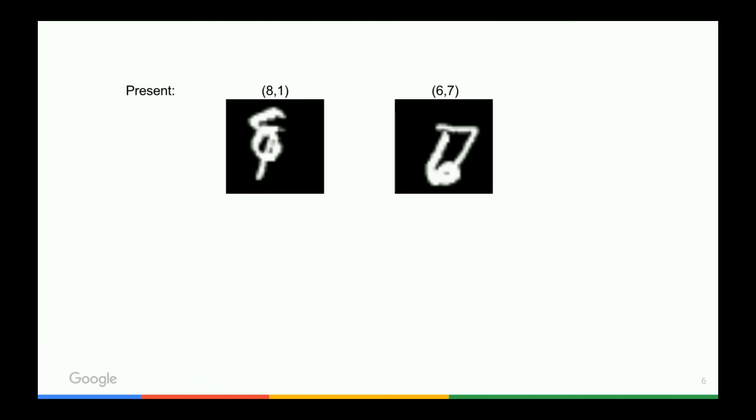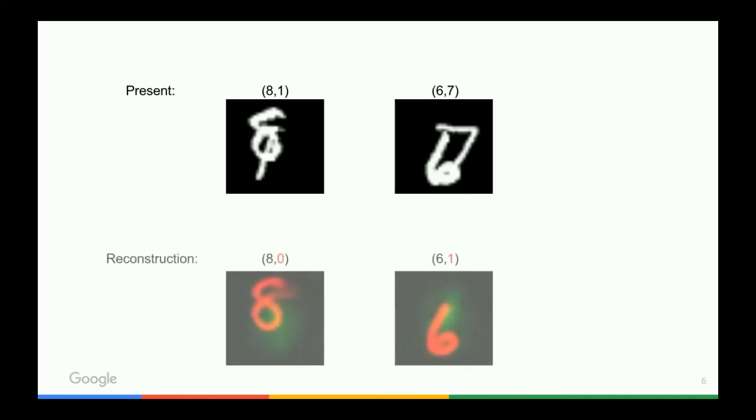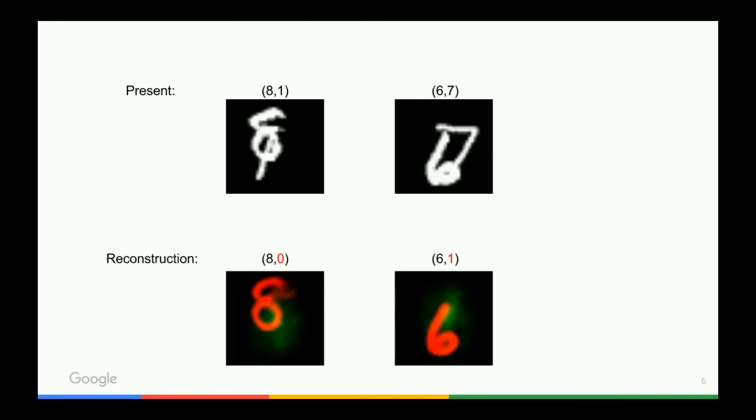Let's see what happens when we try to reconstruct from a capsule instantiation vector that is not in the image. As we can see, the instantiation vector of an absent capsule does not carry any coherent pose information. Thus, the reconstruction network fails to reconstruct sensible digits.